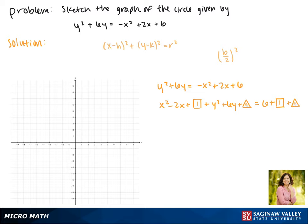So now we can rewrite our equation. We can rewrite our x's as x minus 1 squared, and our y's we can rewrite as y plus 3 squared. And on the right side, this all adds up to 16.